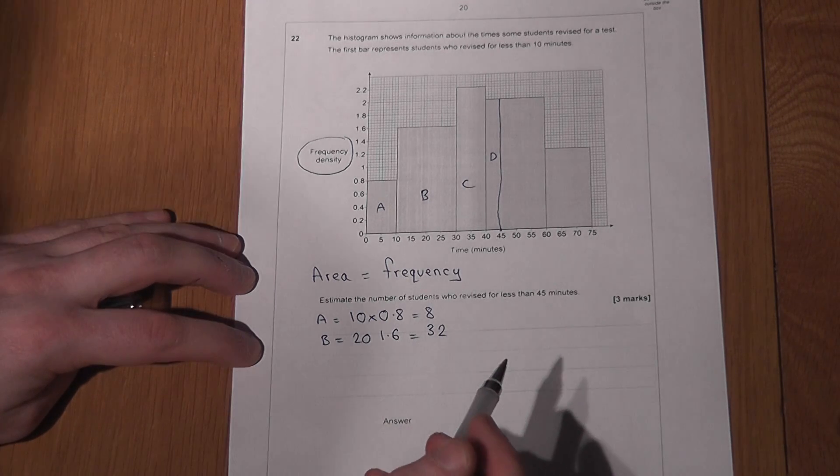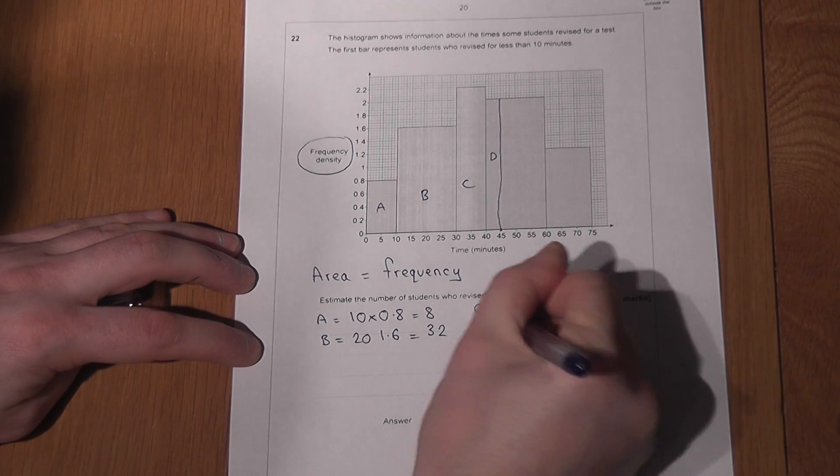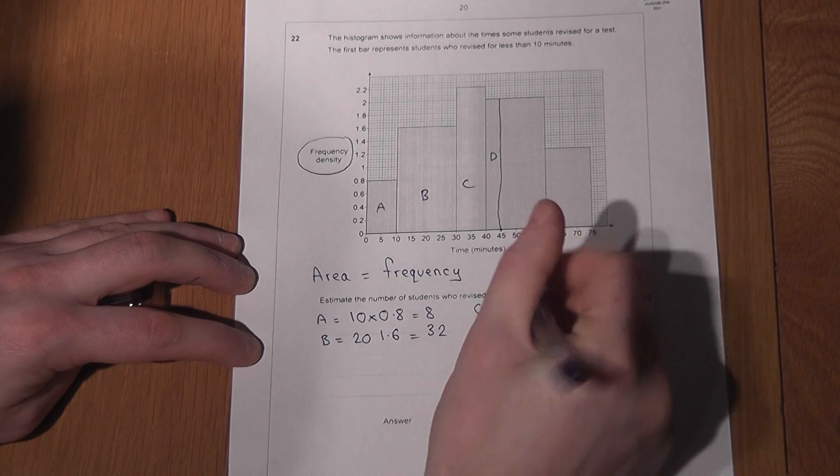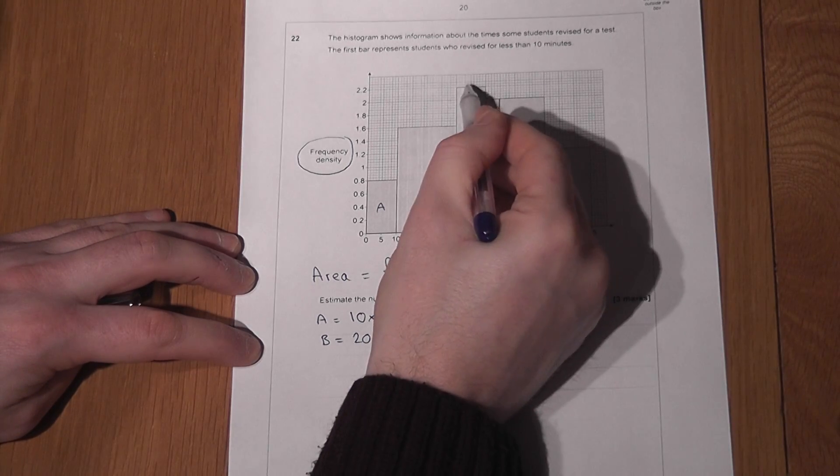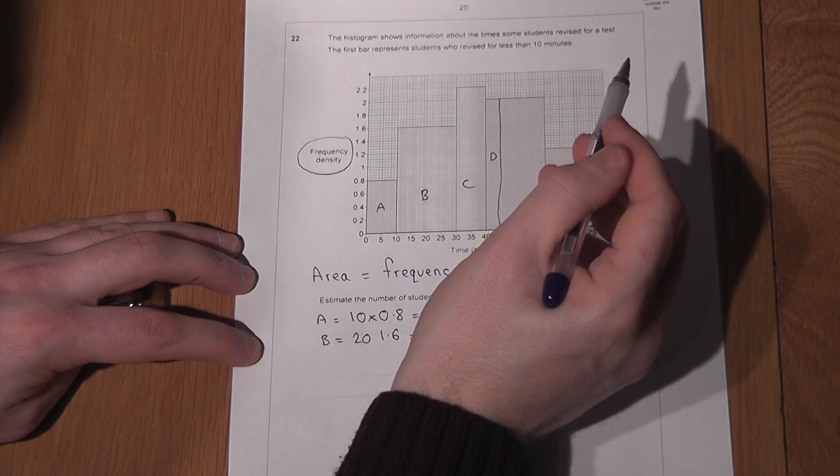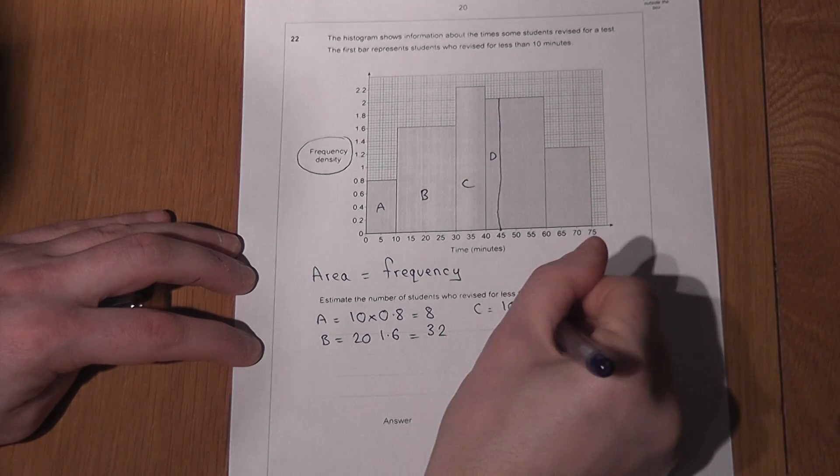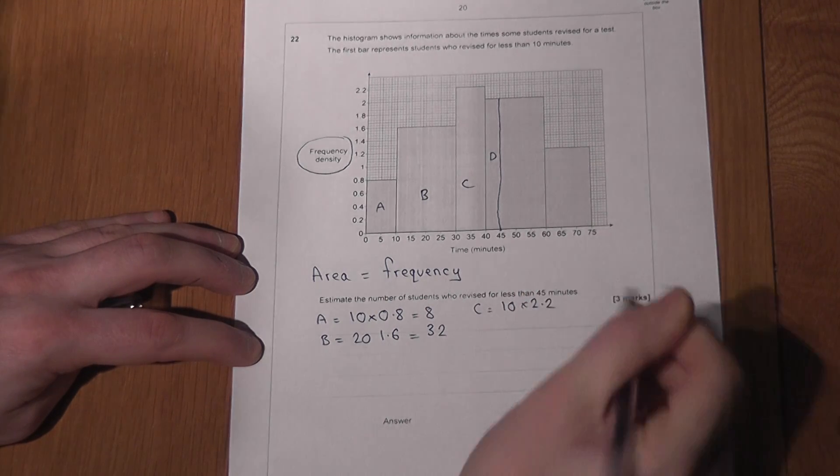Area C, width of 10, a height of 2.6. If I work that out, I get 22.